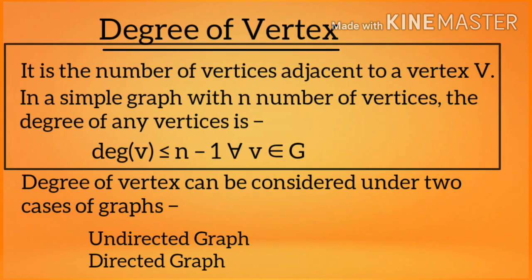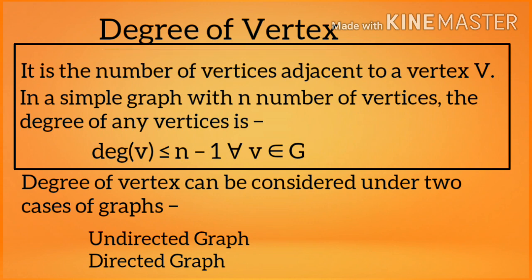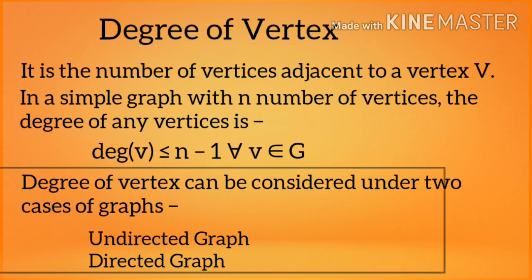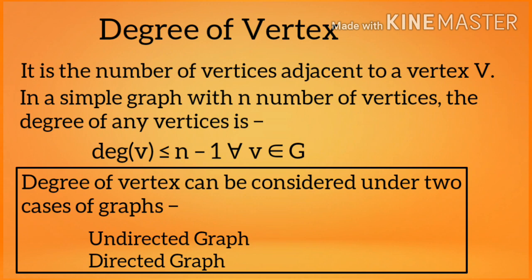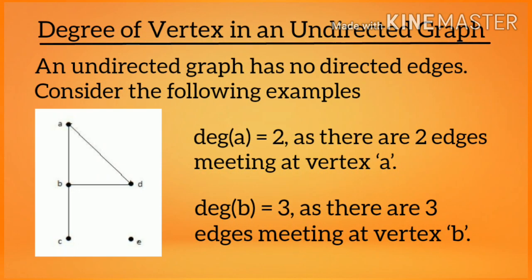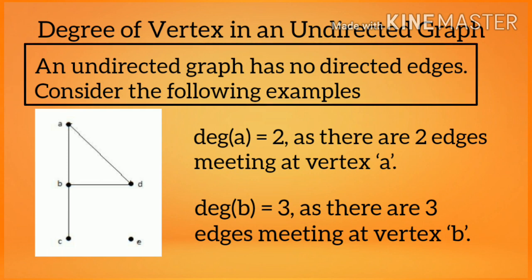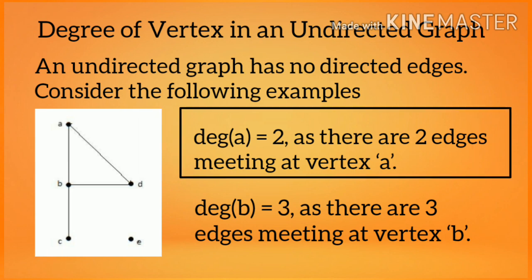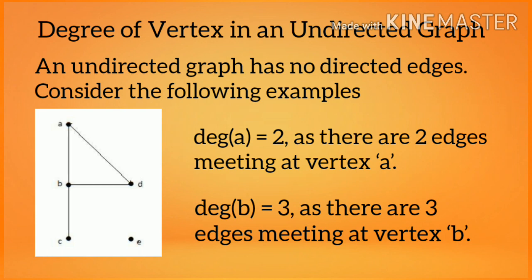Degree of a vertex is the number of vertices adjacent to a vertex V. In a simple graph with N number of vertices, the degree of any vertex is less than or equal to N minus 1, for all V belonging to G. Degree of vertex can be considered under two cases: undirected graph and directed graph. In an undirected graph, there are no directed edges. For example, degree of A equals 2, as there are two edges meeting at vertex A; degree of B equals 3, as there are three edges meeting at vertex B.